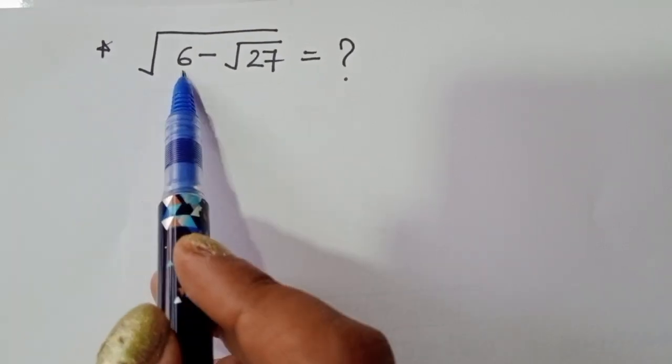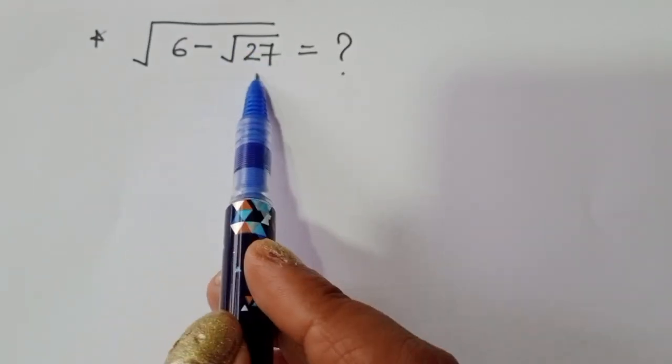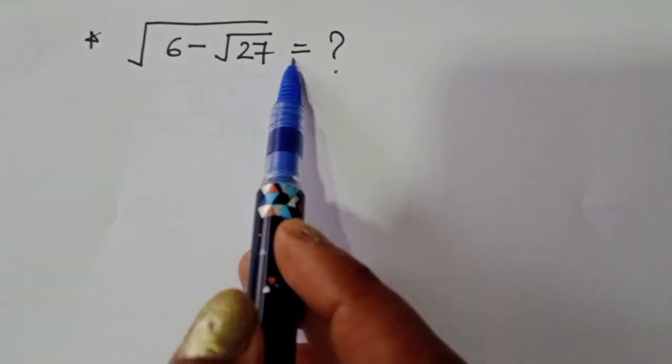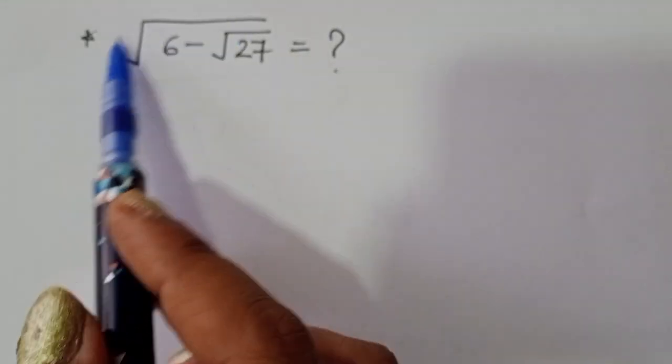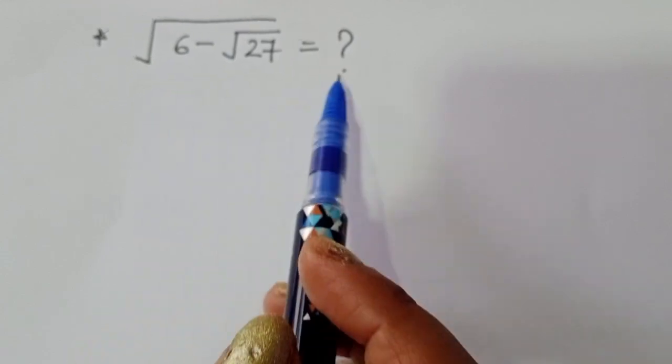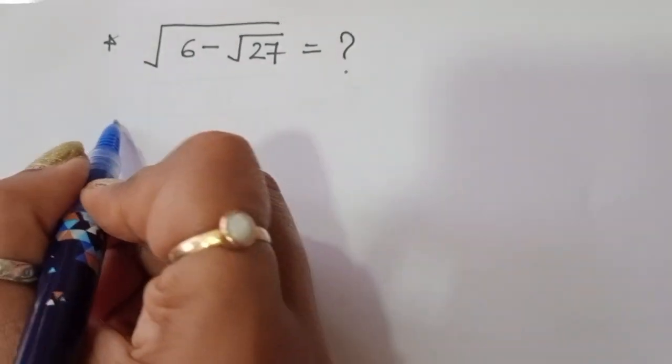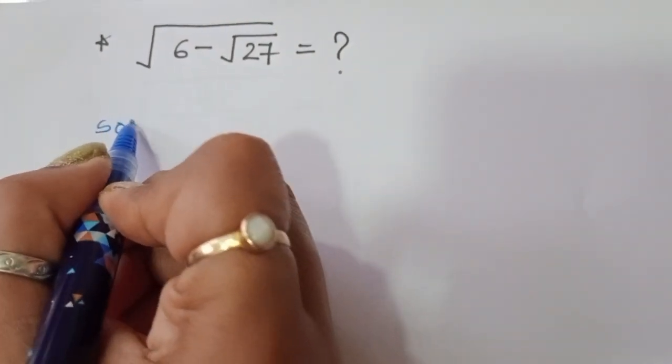The given portion is: square root of 6 minus square root of 27. We have to find out the value of this term. Let's see the solution.